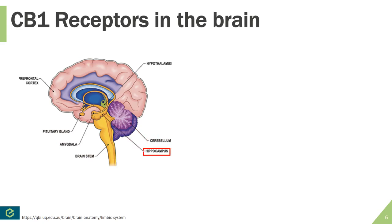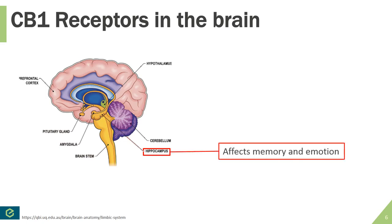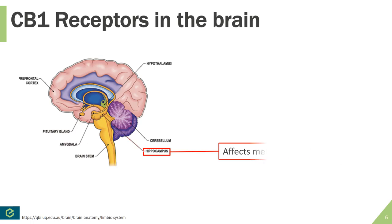Next, we're going to talk about the hippocampus, in the lower middle portion of the brain. When the endocannabinoid system is activated, you'll notice effects on memory and emotion. Short-term memory loss is a common side effect many people report, particularly under the influence of THC, and the hippocampus is somewhat to blame for that. Additionally, the hippocampus is involved in control of emotion — many people have reportedly used cannabinoids for anti-anxiety purposes due to their anxiolytic functions. These effects are strongest with THC; higher dosages of CBD are needed to see comparable effects.